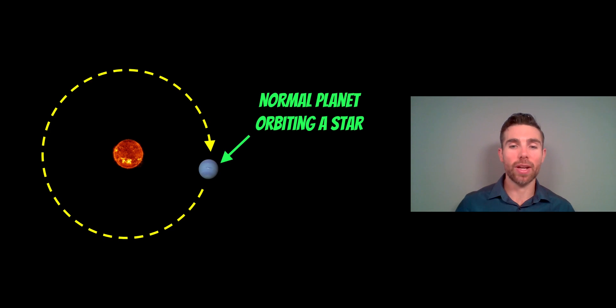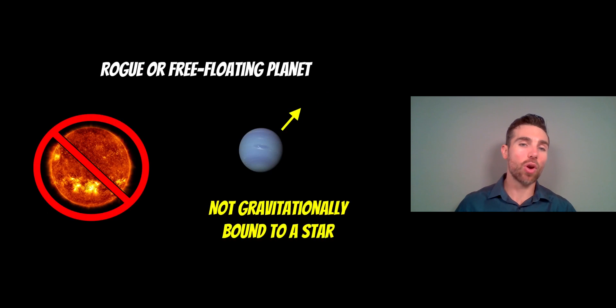But then we have these rogue planets, which we're starting to discover as we look into space. Now a rogue planet, or a free-floating planet, is not gravitationally bound to any star, so it's not orbiting any star. It's just moving through space, essentially as an object on its own, so it will move accordingly in our galaxy, or even outside of our galaxy. So these don't have a host star.